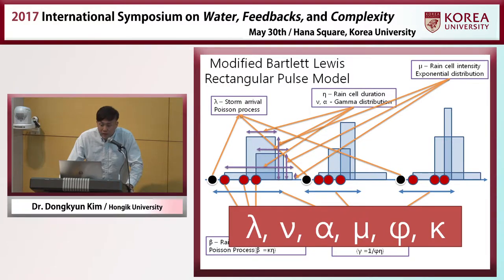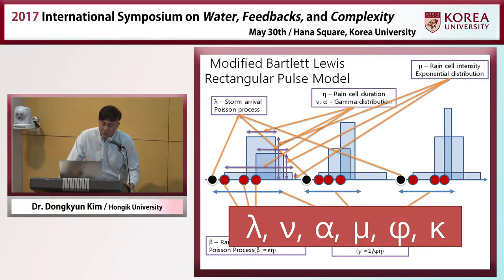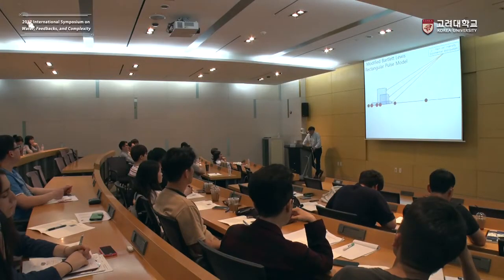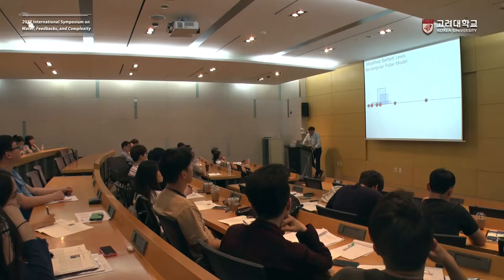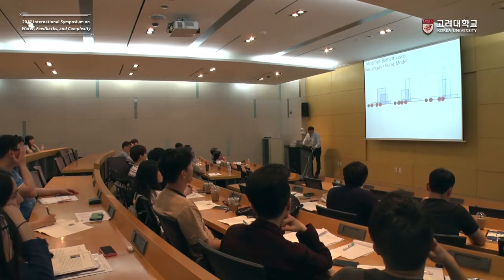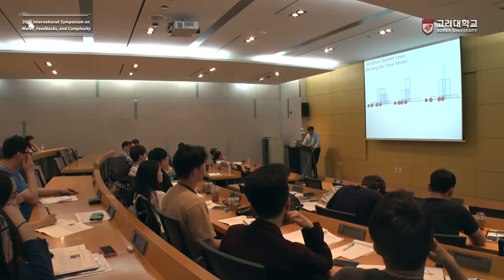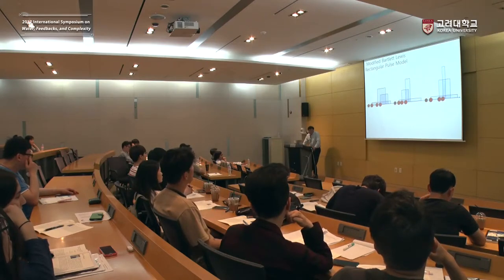The duration of each rain cell is determined by first randomly drawing a number from a two-parameter gamma distribution. That randomly drawn number then serves as the parameter of an exponential distribution, from which we randomly draw the rain cell duration. Rain cell intensity is randomly drawn from an exponential distribution. For each storm, we have repeated rain cell arrivals with random depth and random duration. By repeating this process, we generate the rainfall time series. There are six parameters needed to run this model.